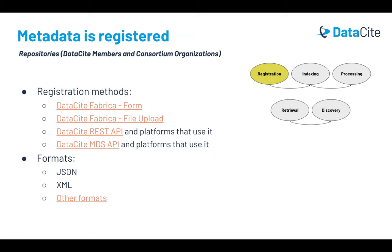Metadata is registered, and there are several DOI registration methods. All of these methods can be used to provide metadata to Datasite — they're just different ways of registering a DOI and sharing the same information. You can create a DOI using the Datasite Fabrica web interface through the web form, or you can upload a metadata file via Fabrica, usually an XML file. Datasite also has two APIs for registering DOIs: the REST API and the MDS API. Repository platforms use these APIs for their Datasite integration, and it's also possible for anyone with a Datasite repository account to use the APIs directly and build their own integration. The REST API mainly accepts JSON format, and the older MDS API accepts XML files. However, you can also submit XML and other formats via the Datasite REST API using an encoding format called Base64.